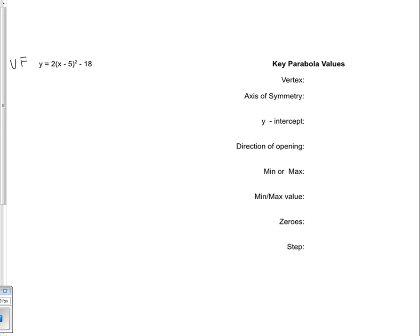Anytime you've got a vertex form of a quadratic equation, you should always indicate what your a, h, k values are. So my a value is 2, my h value is positive 5, and my k value is negative 18. So that tells me that my vertex, which is always at the h, k, so my vertex is at positive 5, negative 18.